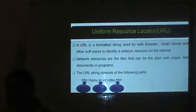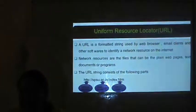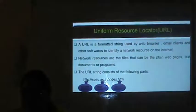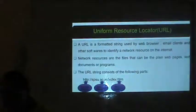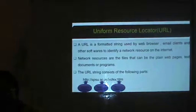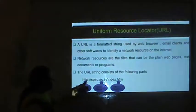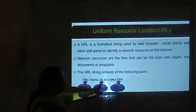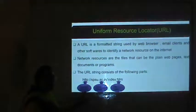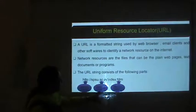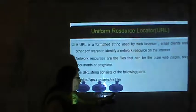What is a URL — Uniform Resource Locator? A URL is a formatted string used by web browsers, email clients and other software to identify a network resource on the Internet. Network resources are files such as plain web pages, text documents or programs. The URL string consists of three parts: the network protocol, the host name and the file name. For example, HTTP is the network protocol, SPST.LC.IN is the host name, and index.html is the file name to be accessed.